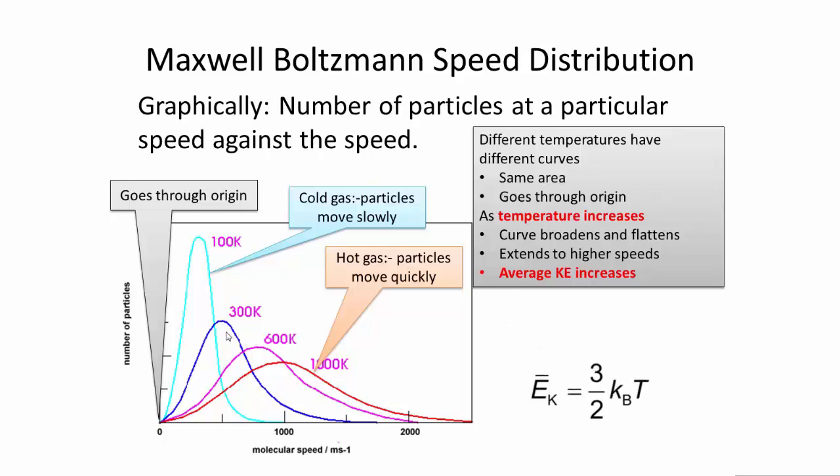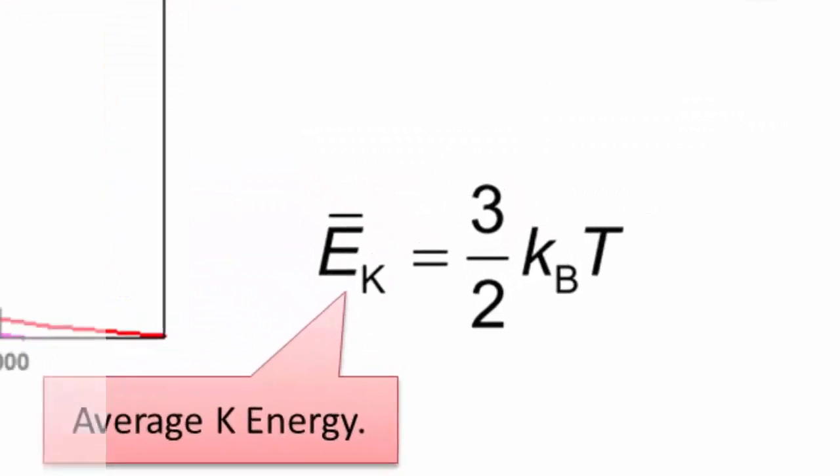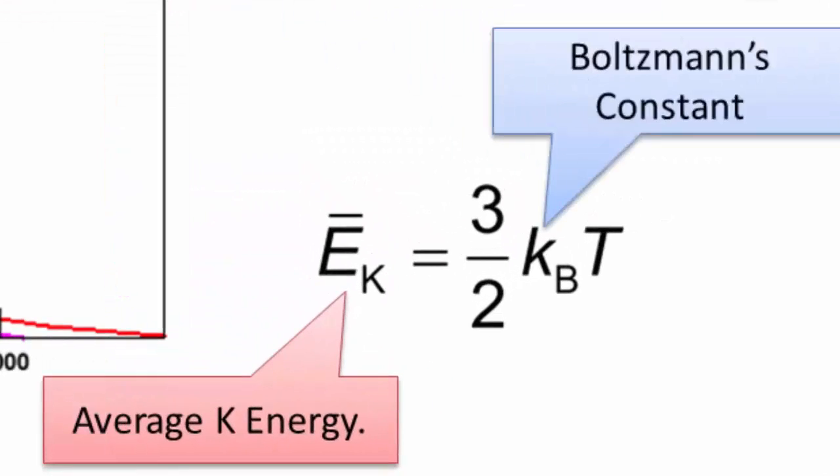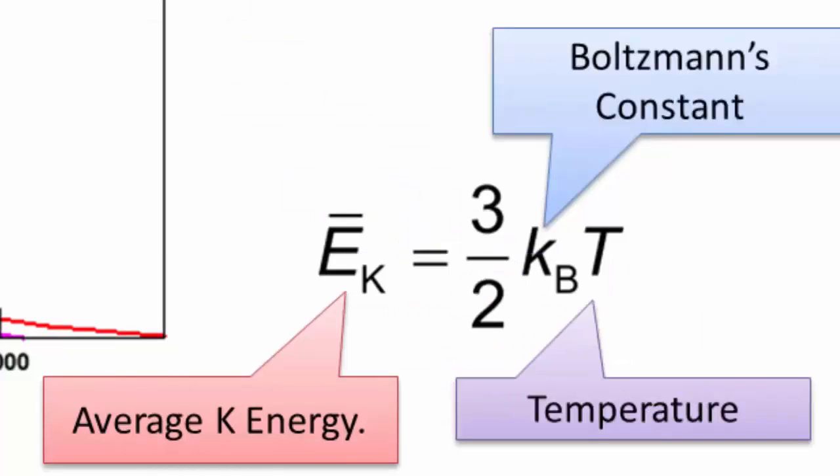This is Maxwell Boltzmann's speed distribution equation. Ek is equal to 3 over 2 k times by T. This is the average kinetic energy. This is Boltzmann's constant. And this is the temperature. So basically, the average kinetic energy is proportional to the temperature.